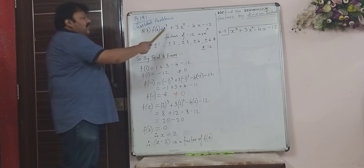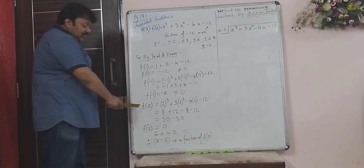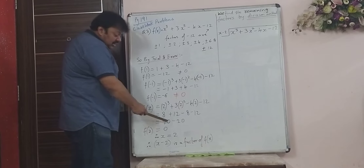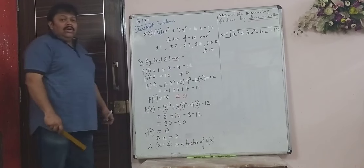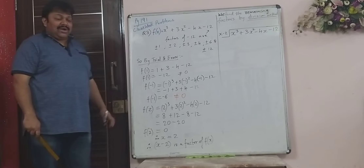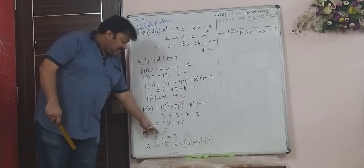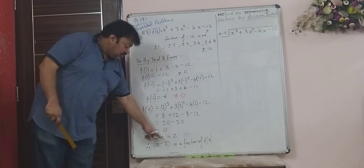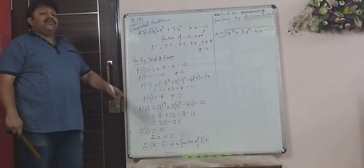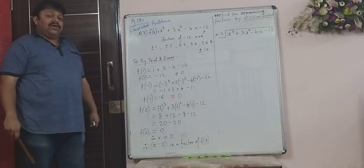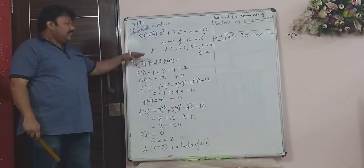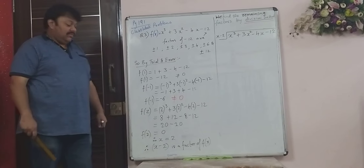Next try f(2). When you try f(2), we see that the remainder is 0. By the factor theorem, x = 2, therefore x minus 2 is a factor of f(x). So we have found the first factor by using trial and error method.